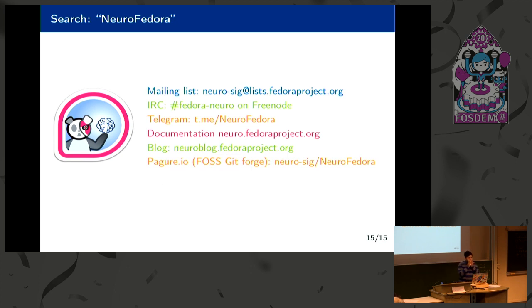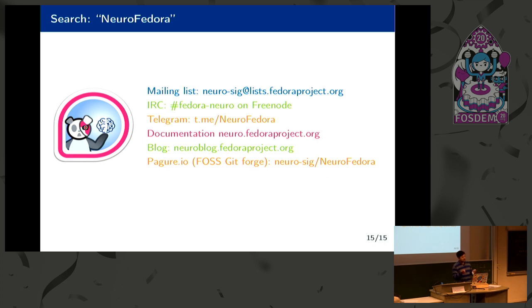Question: Are you maintaining your own separate repository, or how much effort is going into upstreaming packages into the main Fedora repository? Answer: The upstream is separate from our Fedora repository. We take the release tarball or release zip from the upstream and use it as our source code, then package it in a nice way and provide it to end users. It's all separate.